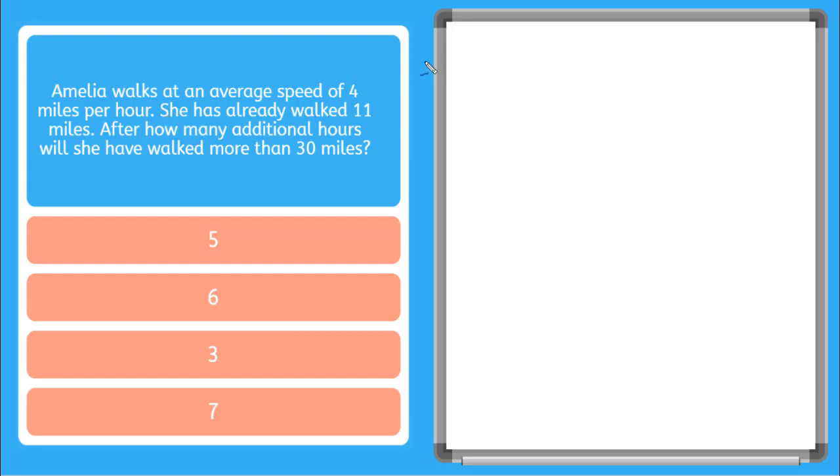So we know Amelia has walked 11 miles, so 11. And we have her rate at an average speed of 4 miles an hour. So plus 4 miles an hour times the number of hours. Will she have walked more than 30 miles? So this has to be greater than 30 miles.